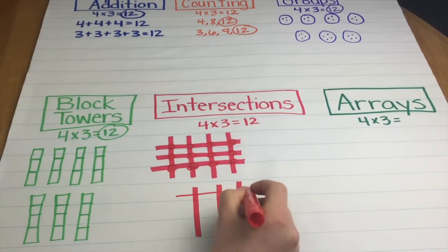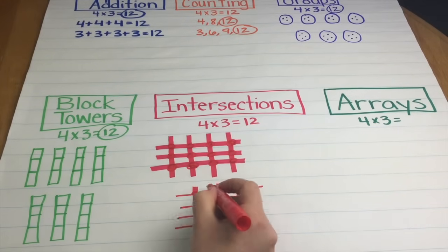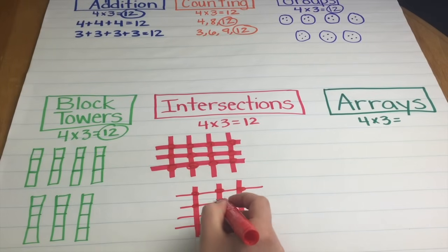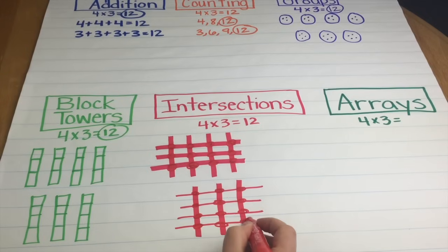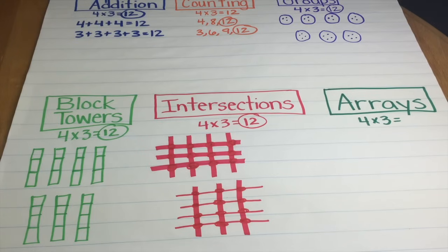And again, counting those intersections: 1, 2, 3, 4, 5, 6, 7, 8, 9, 10, 11, 12. Okay? So getting the answer of 12, just another strategy.